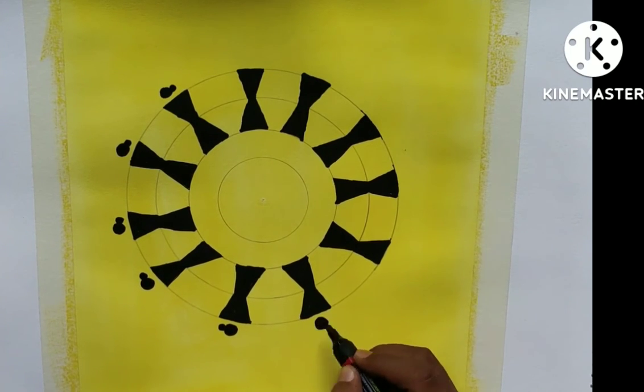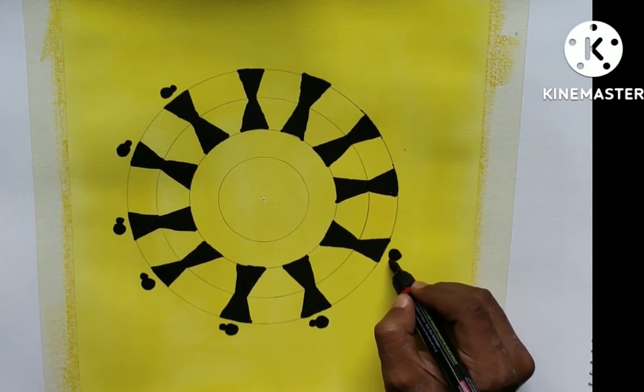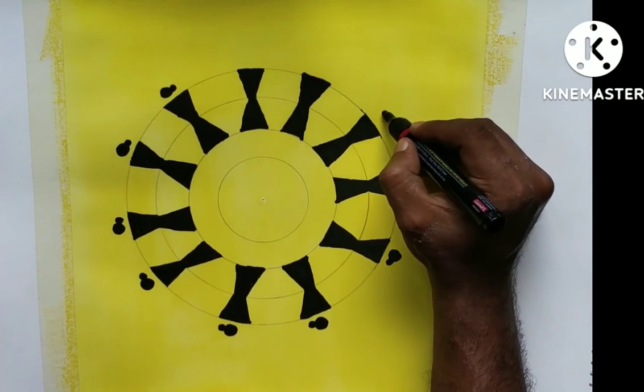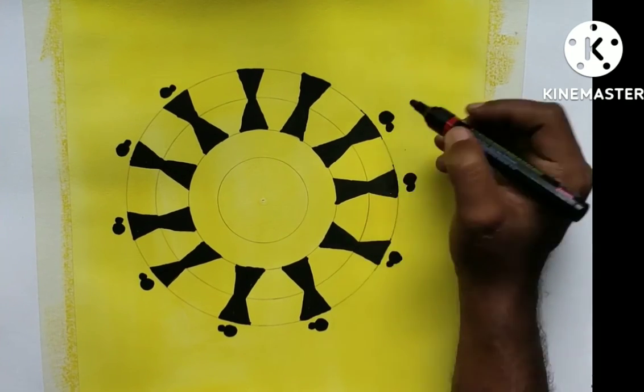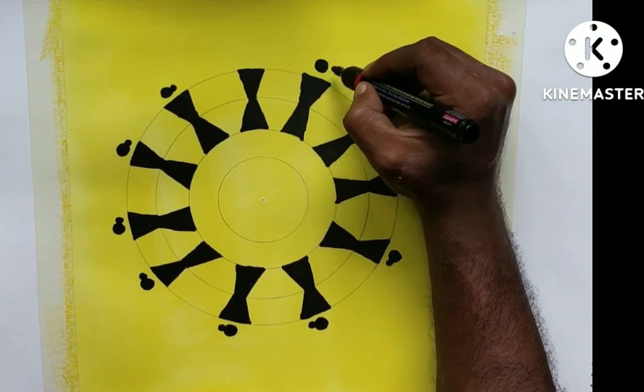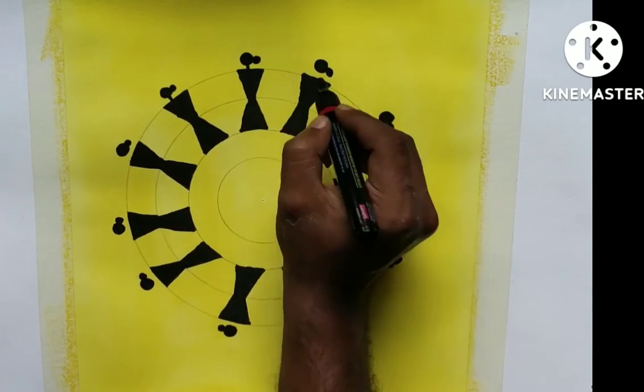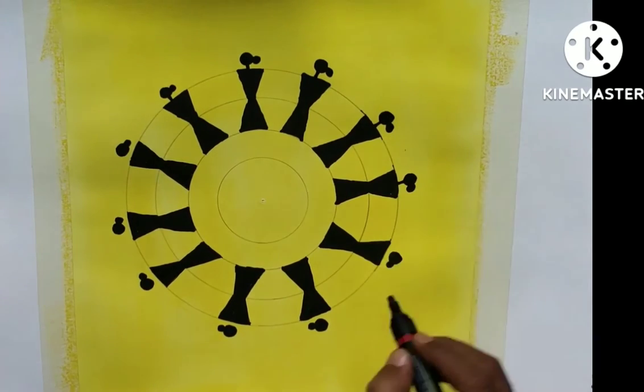Now I am painting the heads of some women. These all are women figures, and I am drawing the painting with a black thick marker.